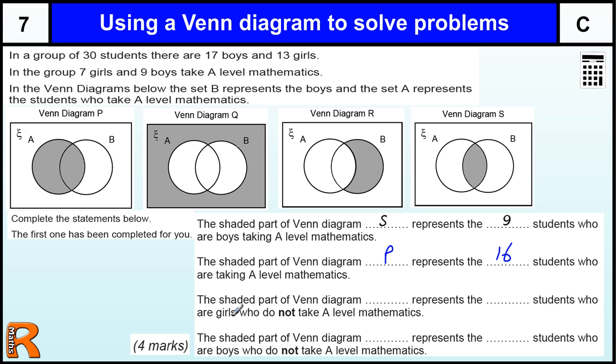Which diagram represents students that are girls who do not take A level maths? They have to be outside A because they're not taking A level maths, and they have to be girls so they're outside B as well. The only one which is outside A and B is Diagram Q. How many girls are not taking A level maths? Thirteen take away seven, which is six girls.